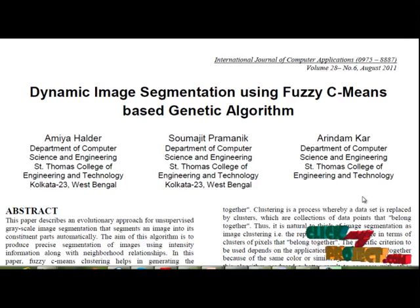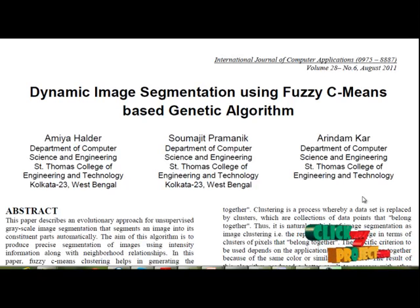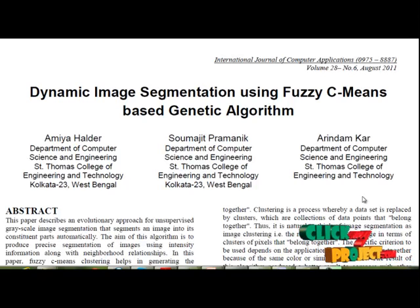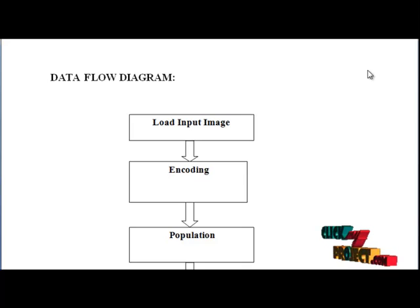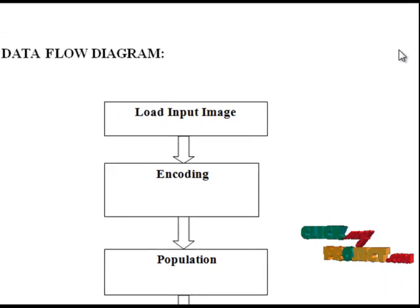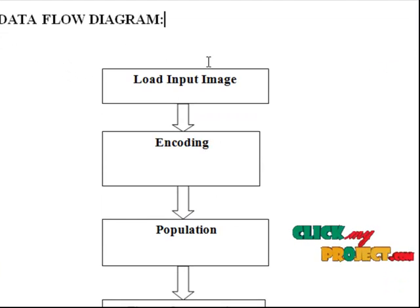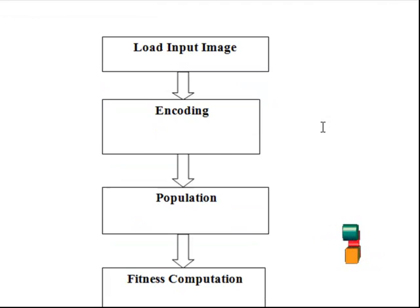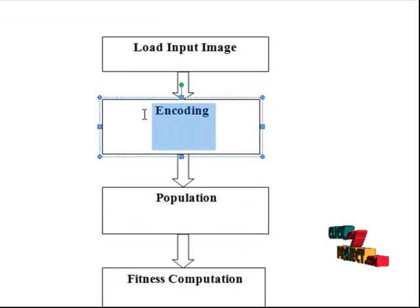Image segmentation is a very important field in image analysis, object recognition, image coding, and medical imaging. We will apply the proposed work to medical MRI brain images. Now let us see the data flow diagram. First, we load our input MRI brain image, and the next step is encoding.